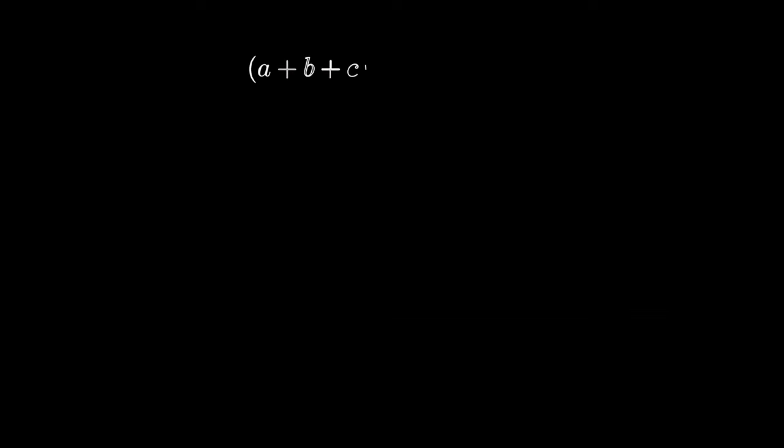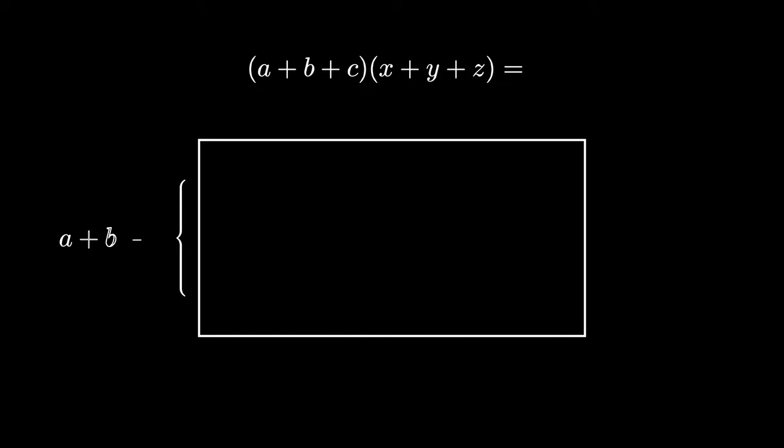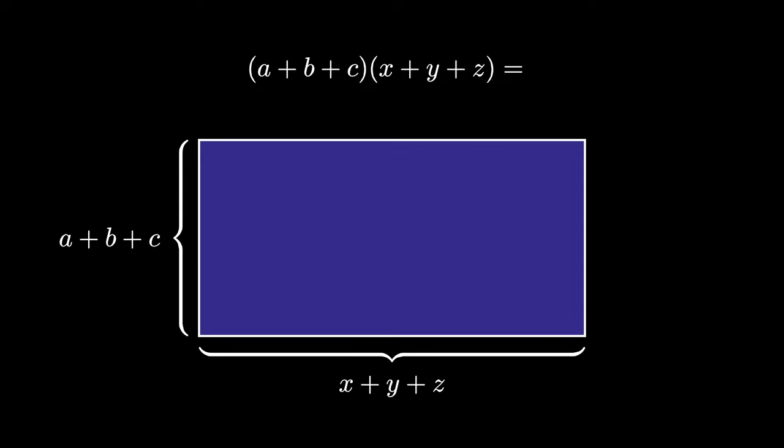Now it's your turn. Can you figure out the product of A plus B plus C and X plus Y plus Z using the area model? Here's a hint for you. You want to compute the area of this rectangle, which is an A plus B plus C by X plus Y plus Z rectangle. The first way is to just multiply the two numbers.